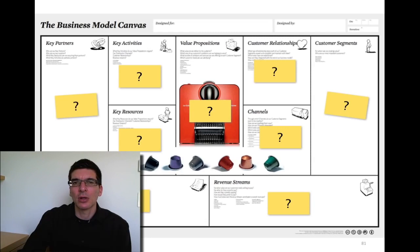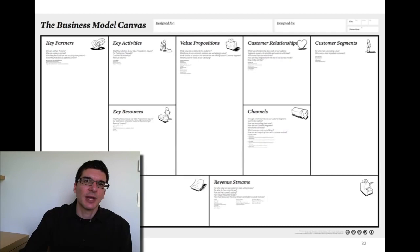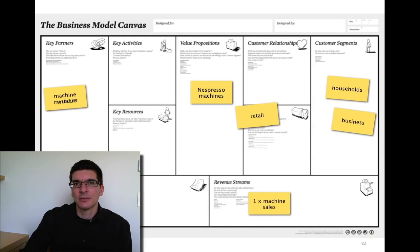So they had a very deliberate strategy. Their strategy was to sell the Nespresso machines through retail channels, all the retail channels possible, to households mainly, a big part of their business. They would earn money from a one-time transactional sales. But most of that money would go to their partners, the machine manufacturers. Now why do they sell through retail? What do you think? Because they want to reach as many people as possible.